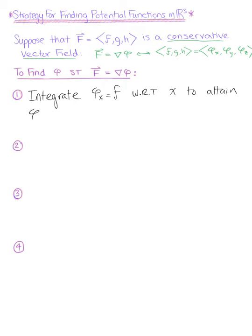One thing to note here, just like we saw with R2, this integration includes an arbitrary constant function. Since we've integrated with respect to x, the only two variables left are y and z. So this includes an arbitrary constant function defined as g(y, z).